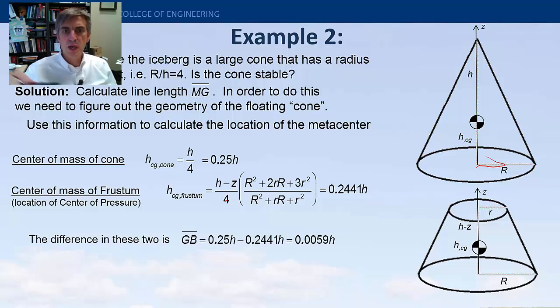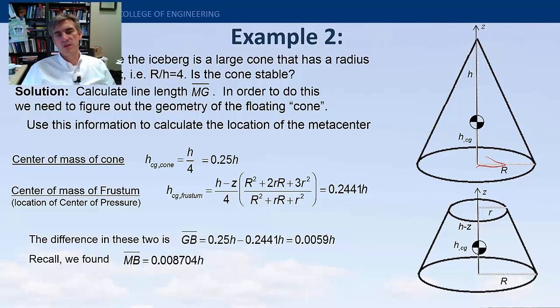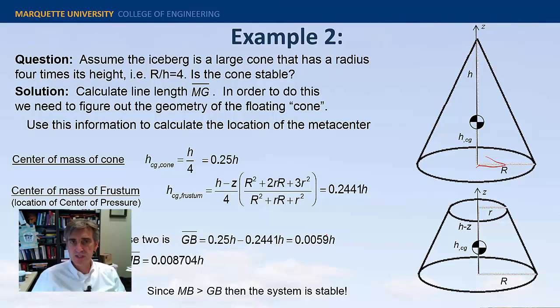Anyway, the difference in those two is 0.0059. And, you compare that to what we found for the distance MB, 0.0087. You can see that MB is, in fact, longer than GB. So, that puts the metacenter above the center of gravity. And, the system is stable.